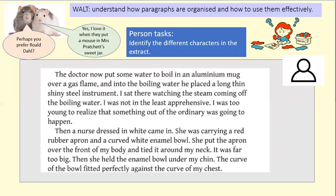Did you find three? In paragraph one we've got the doctor and the narrator — Roald Dahl himself, saying 'I.' Then finally in the second paragraph we've got the nurse. You can see how Roald Dahl has shifted his paragraph and started a new one when he describes the entrance of the nurse to the scene.